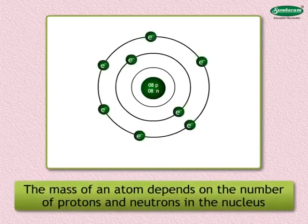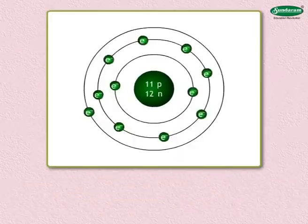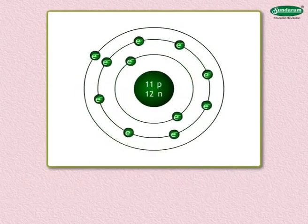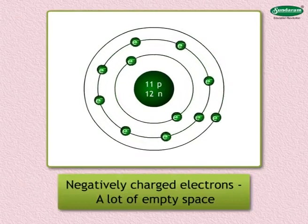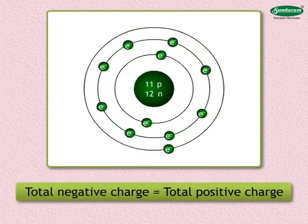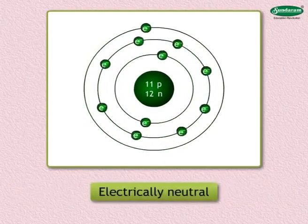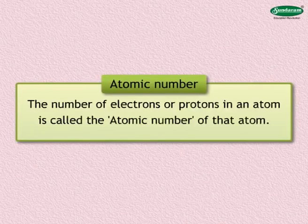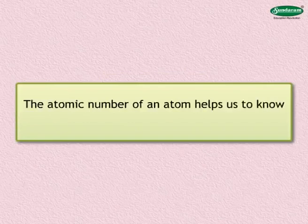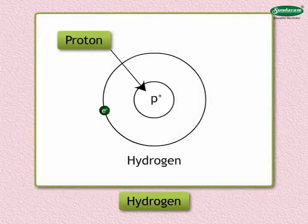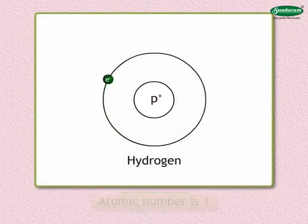The mass of an electron is negligible compared to that of a proton or neutron, so the mass of an atom depends on the number of protons and neutrons in the nucleus. The part of the atom outside the nucleus consists of negatively charged electrons and a lot of empty space. The total negative charge of all the electrons equals the total positive charge in the nucleus, making the atom electrically neutral. The atomic number, represented by Z, is the number of electrons or protons in an atom.